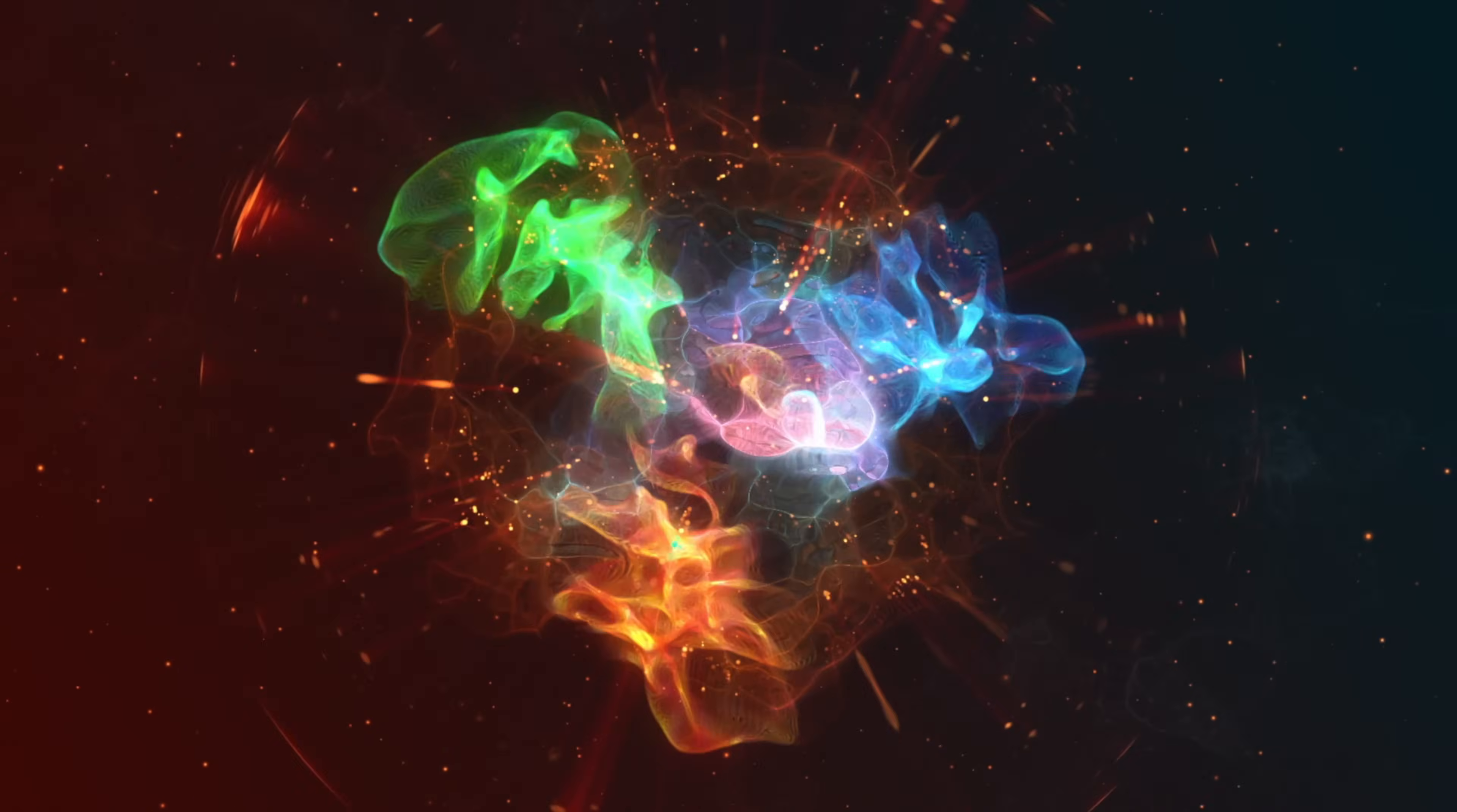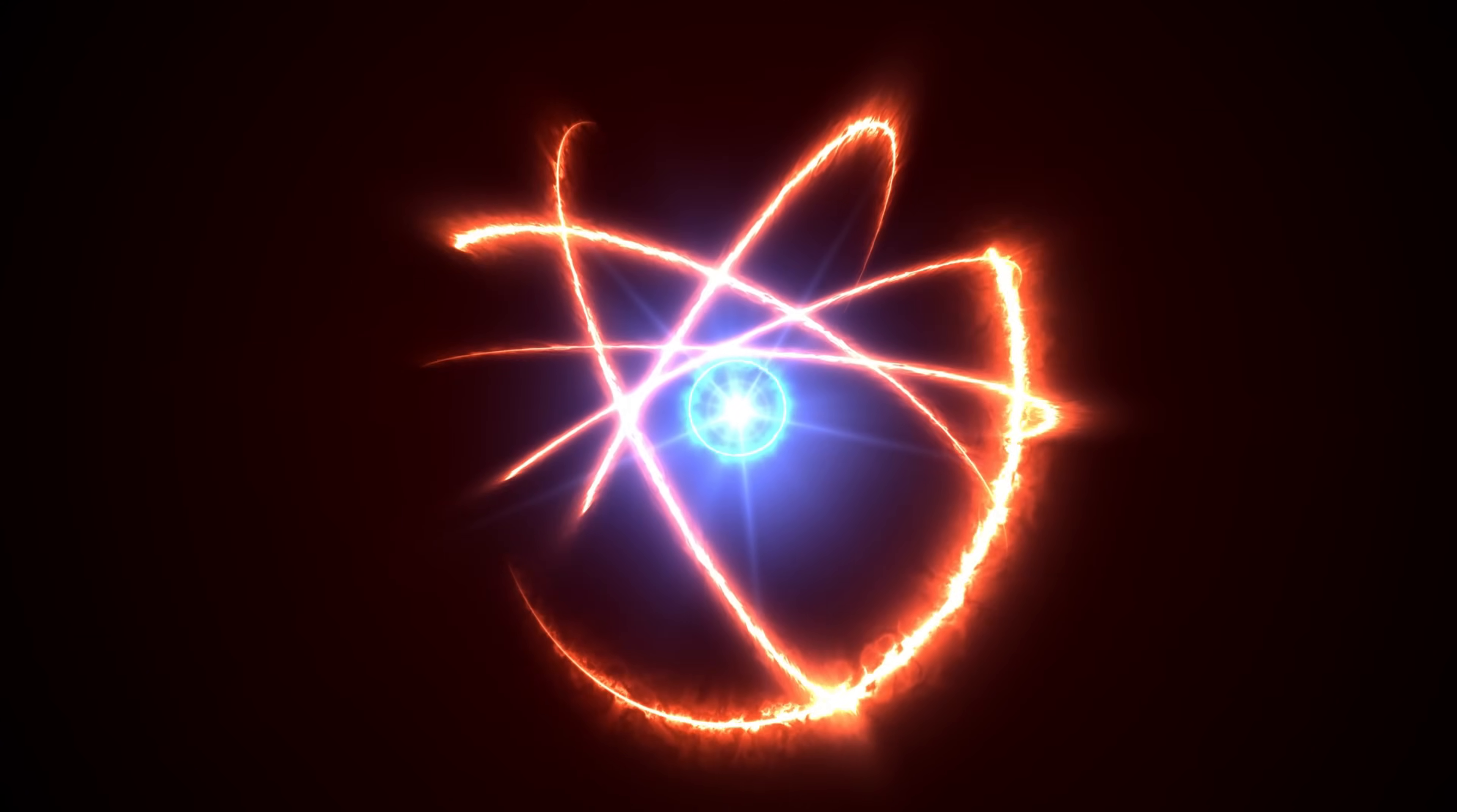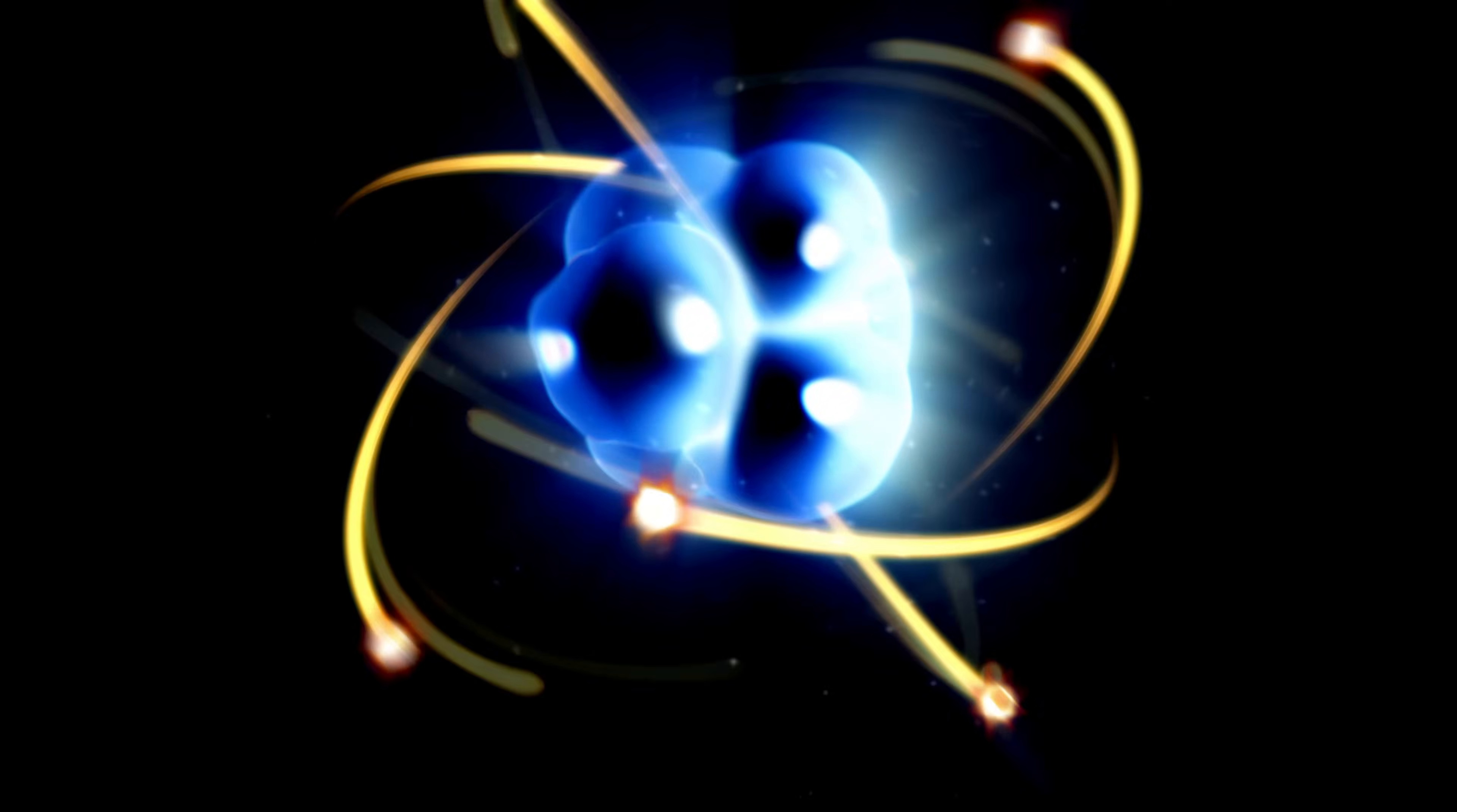So how do these little quarks come together to form protons and neutrons? It all boils down to the strong nuclear force, the glue that holds quarks together. This force is incredibly strong, much stronger than the electrical force which attracts protons and electrons, or the gravity that keeps us grounded. It's the reason protons and neutrons can exist within the nucleus, despite the repulsive force between their positive charges.